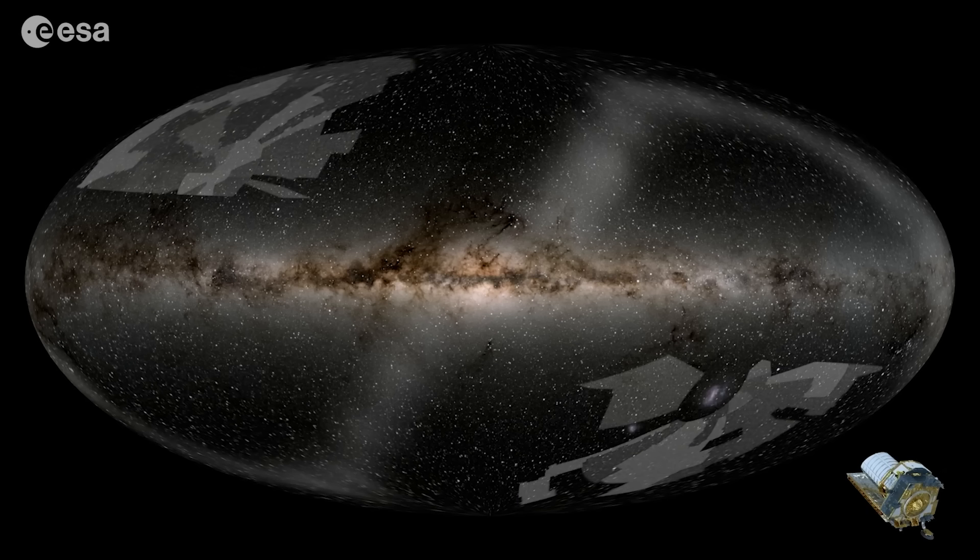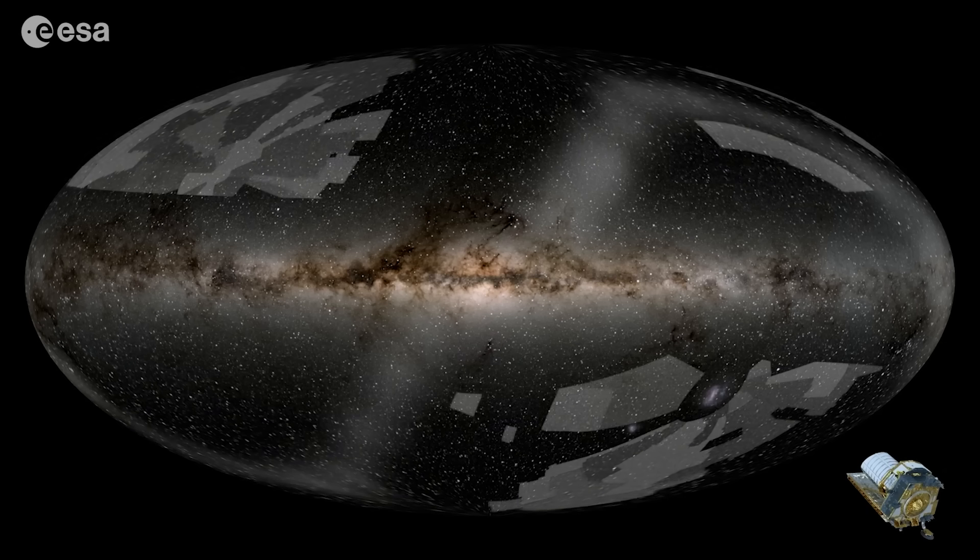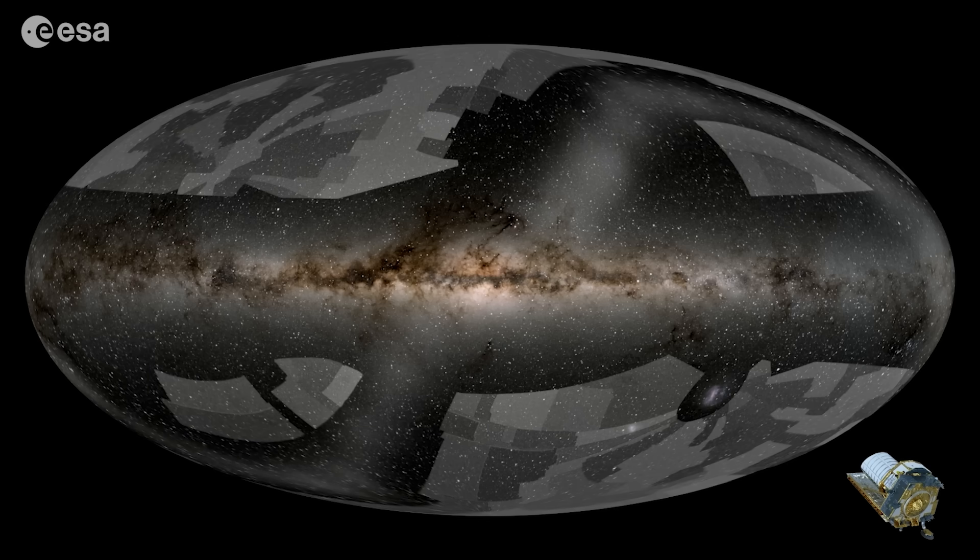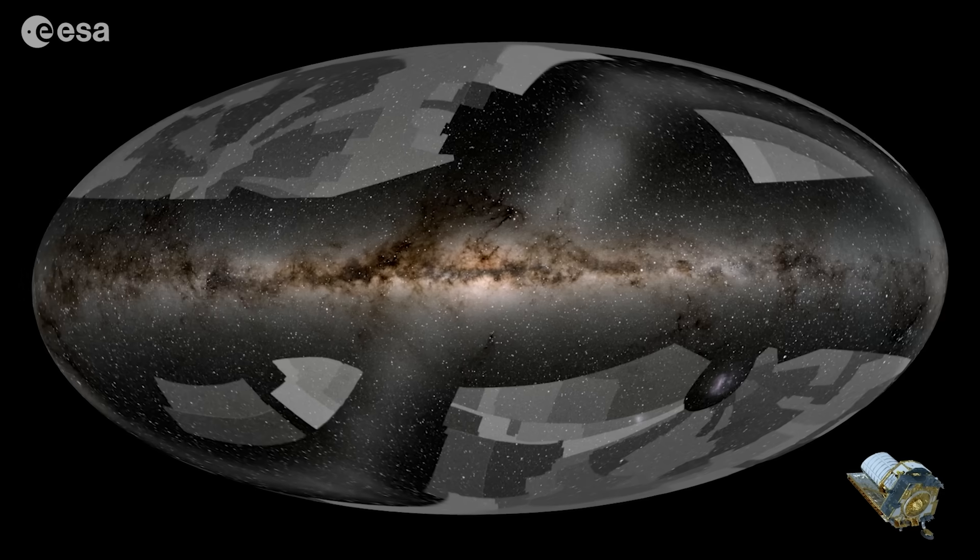And here's the incredible part. The first round of observations covers only 0.4% of Euclid's total pan-survey area. But what exactly did Euclid find in these early glimpses into the cosmos?